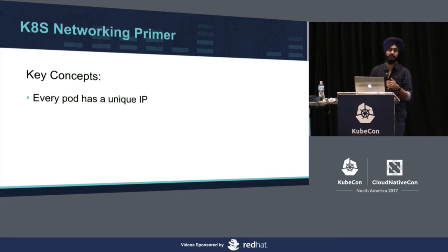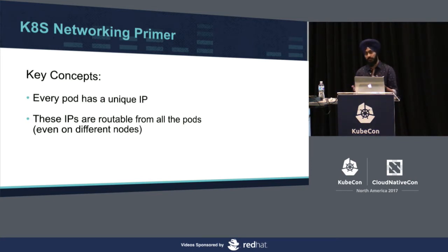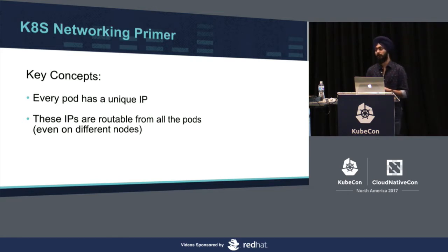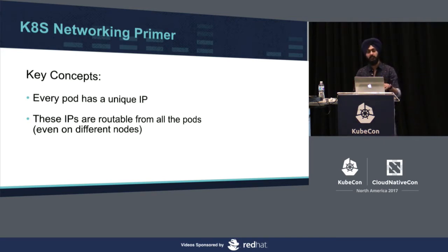This has an advantage that we can use the same port for all applications without problems. Another requirement is that all these IPs are routable from all pods, regardless of whether they're on the same node or a different node. This can be done via ARP across nodes, or in a cloud environment using cloud provider route tables, where traffic for a particular CIDR block is sent to a particular node. Kubernetes doesn't care what you use, but all IPs should be routable from all pods.